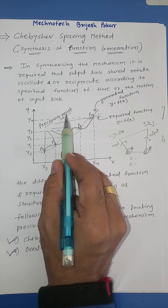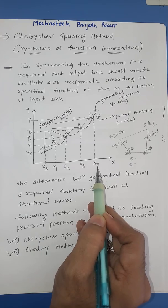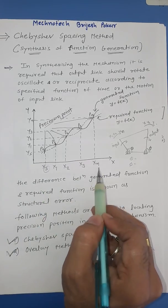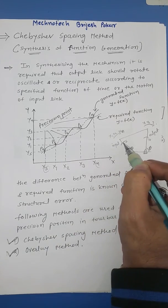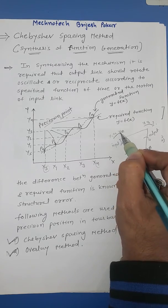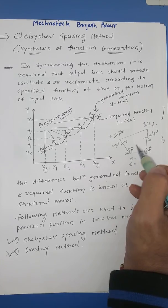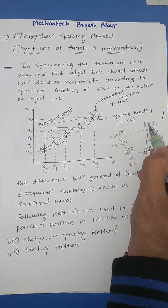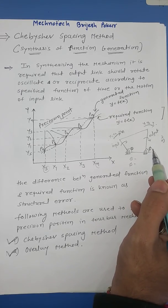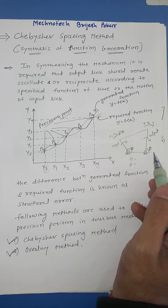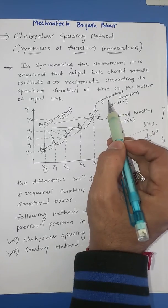You can see here this is a precision point, and here you can see this is xs to xn — this is the starting and this is the n number of points. From this figure you can understand: x1, x2, x3, xn are input positions for theta angle, and y1, y2, y3, yn are the output positions for the phi angle.